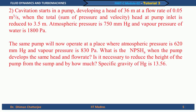The second problem is about cavitation in a pump. A pump develops a head of 36 meters at a flow rate of 0.05 m³/s. Cavitation starts when the total head at the pump inlet — that is, the sum of pressure and velocity heads — is reduced to 3.5 meters. The atmospheric pressure is 750 mm of mercury and vapor pressure is 1800 Pa. This same pump will now operate where atmospheric pressure is 620 mm of mercury and vapor pressure is 830 Pa.